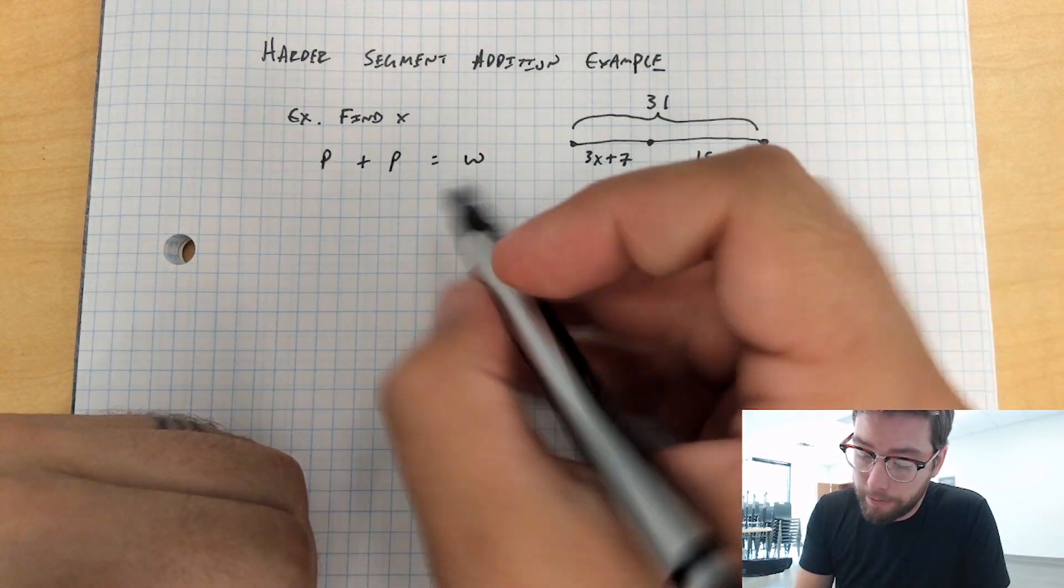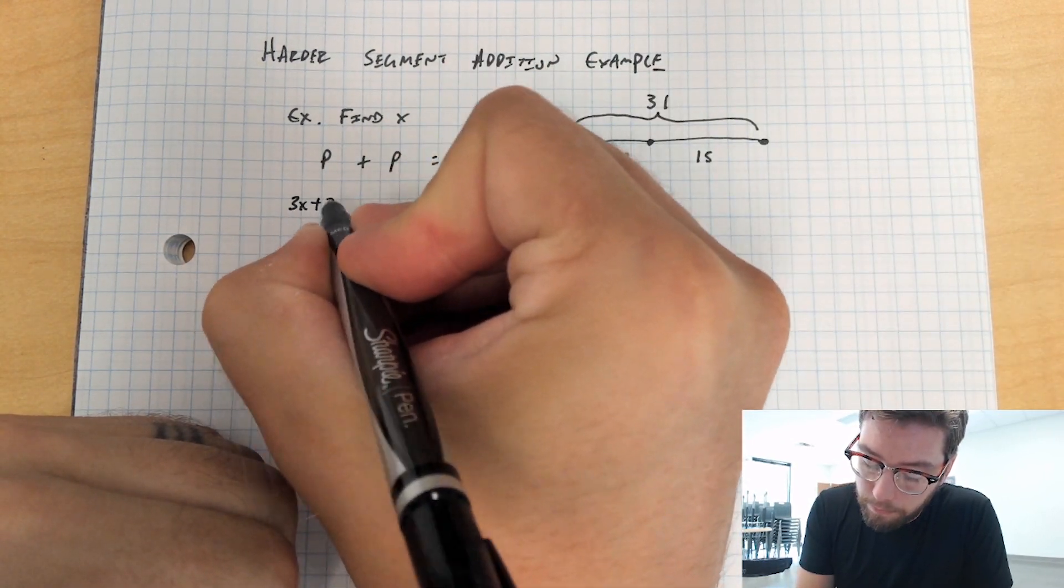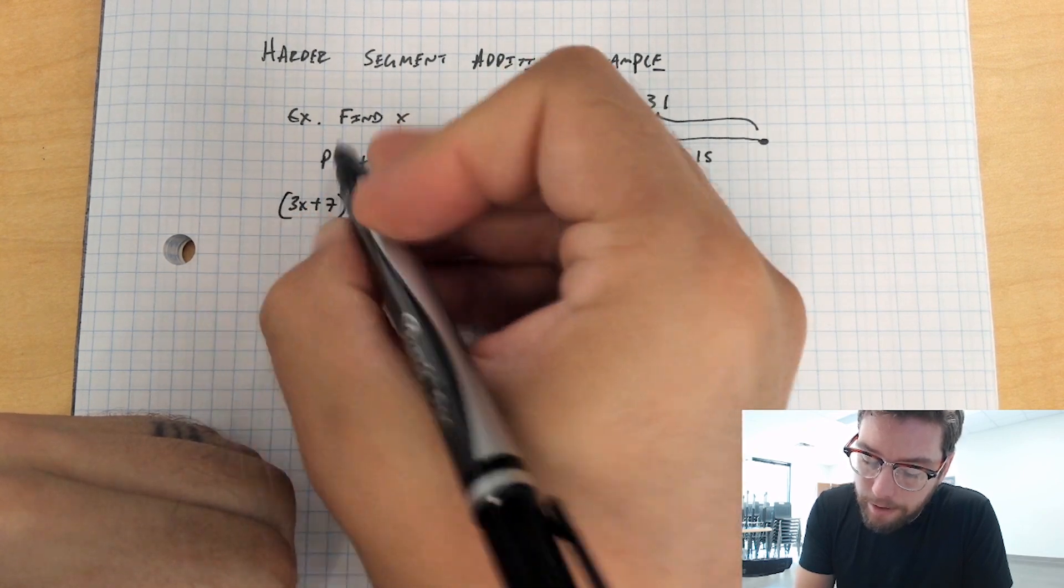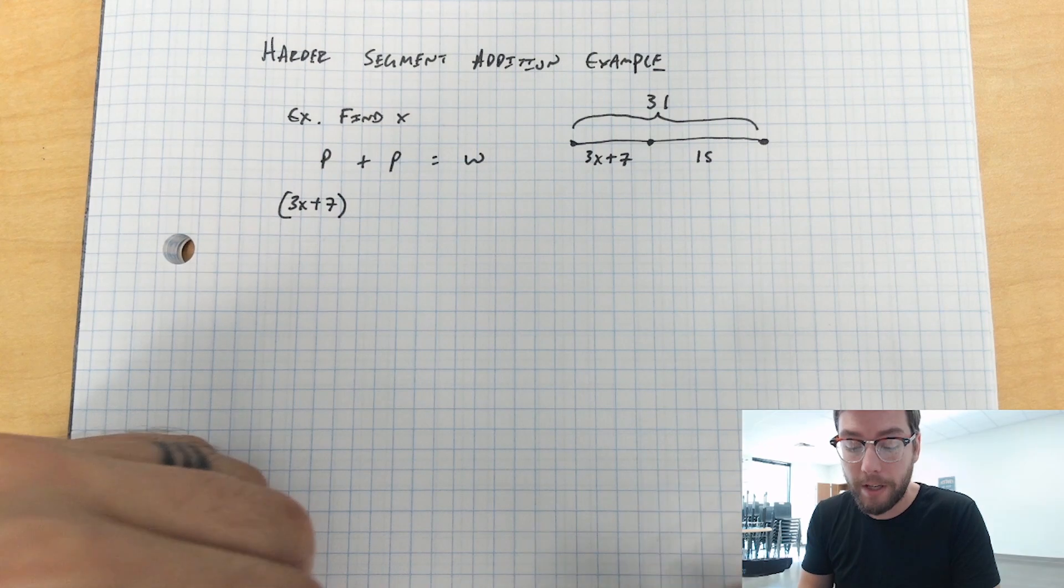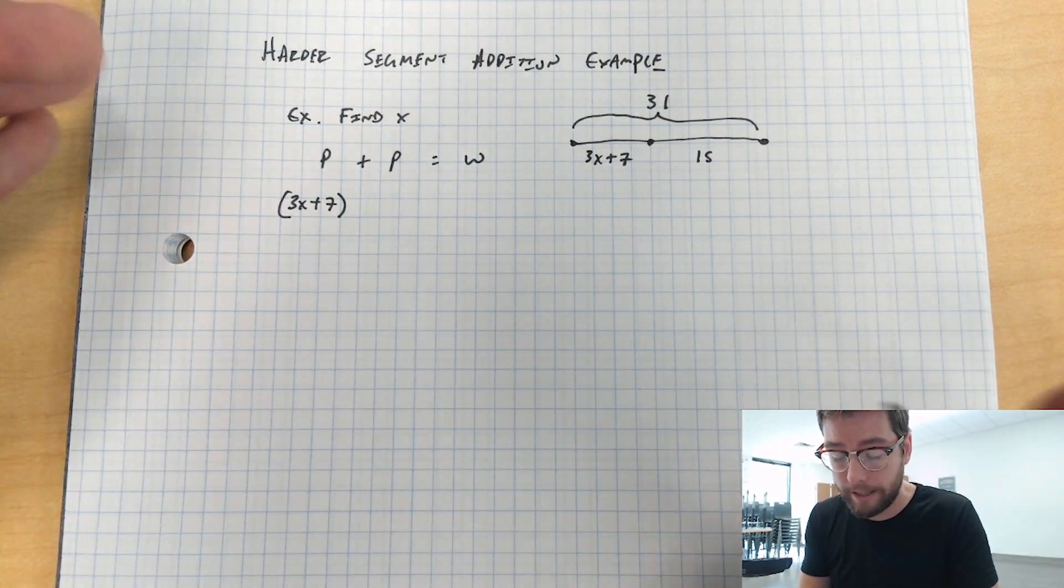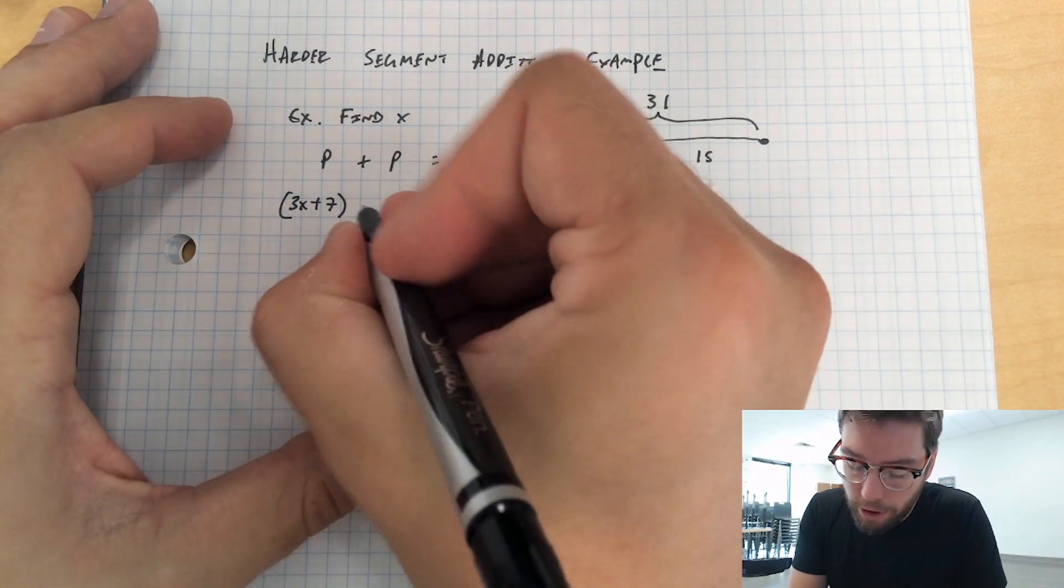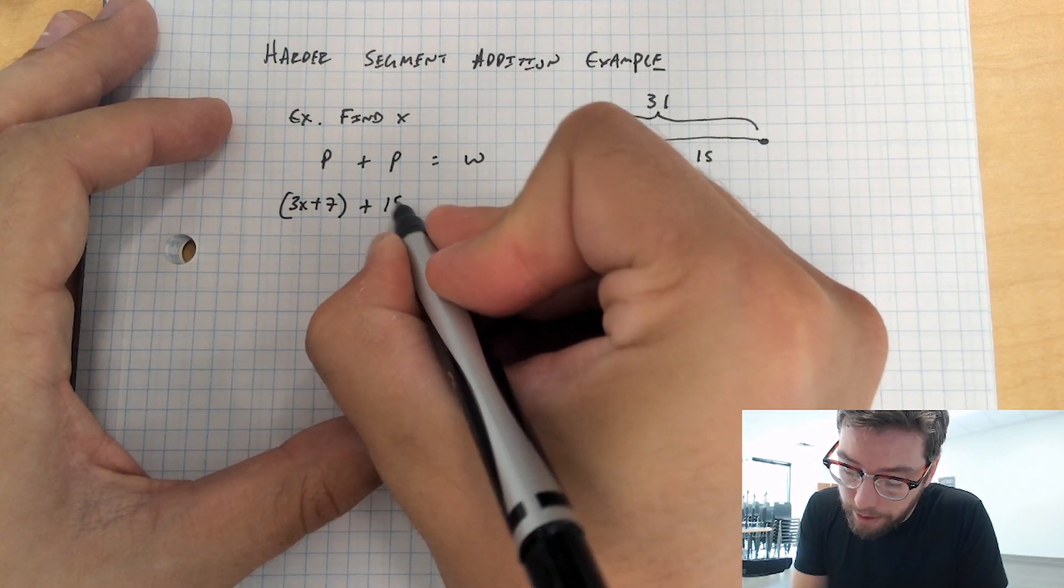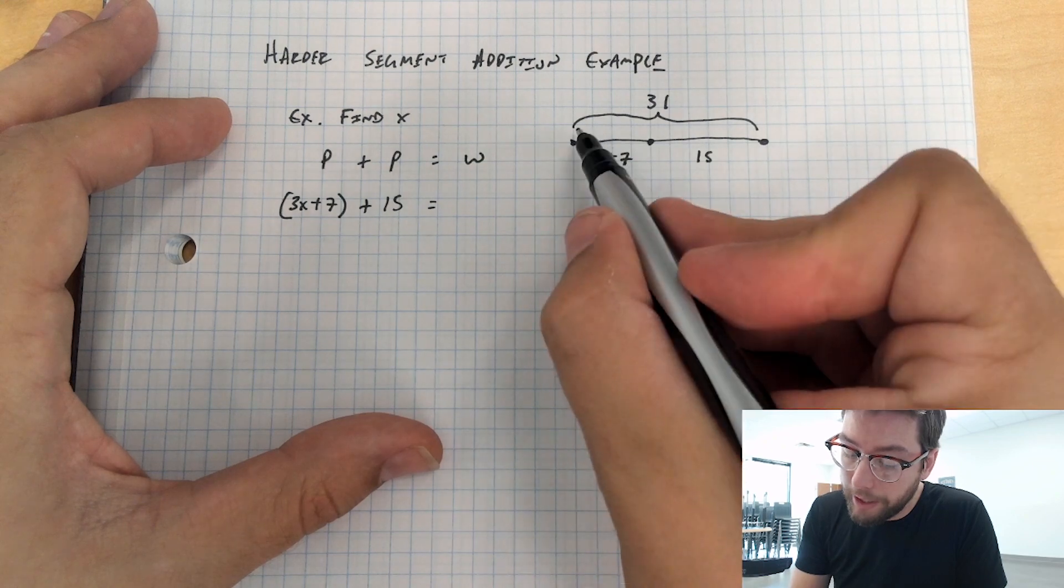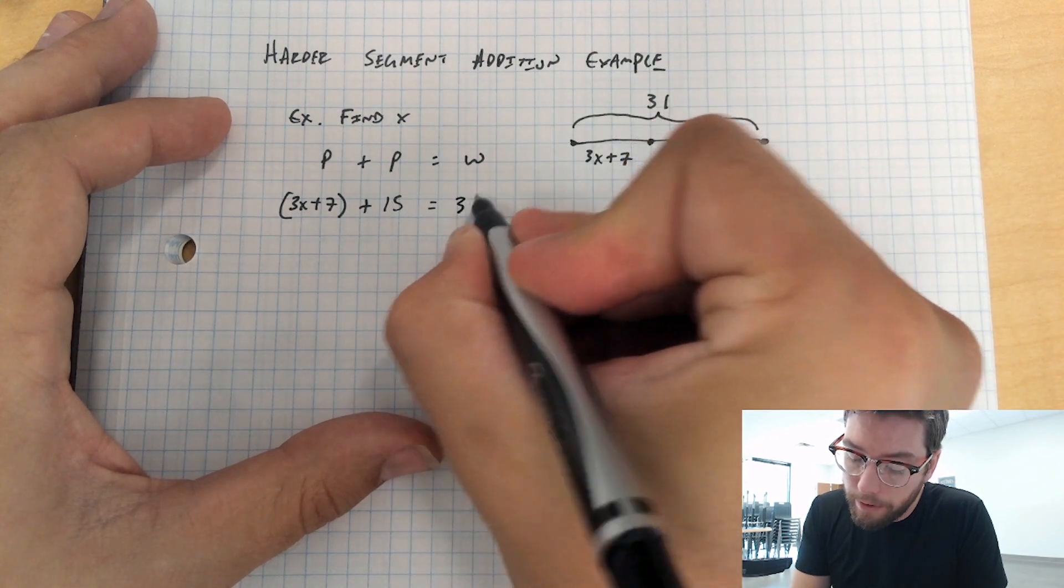So the first part is 3x plus 7. Whenever you replace a variable with an expression like this that includes two numbers like 3x and 7, we're going to put those in parentheses. It's a good practice to have. And then the second part is going to be 15, and the whole thing is equal to 31.